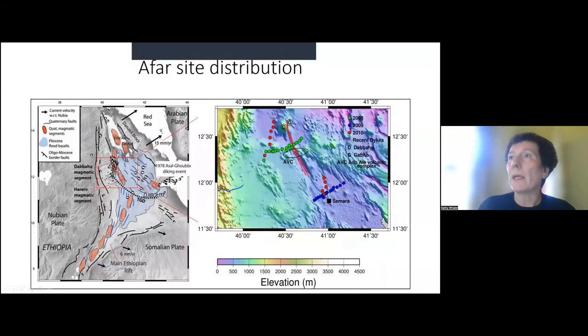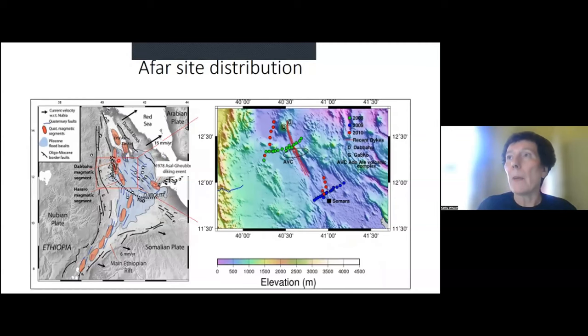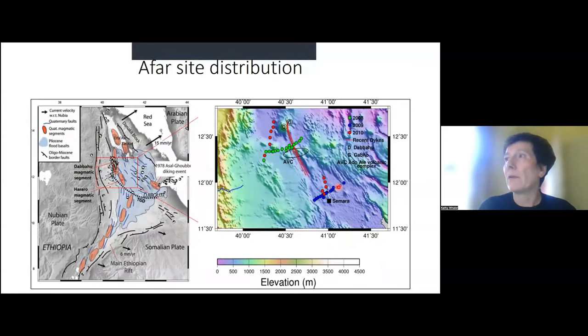So I'm not going to talk anything really about the inversion or treatment of the data, but I'll go on to some actual examples. And in 2005, there was a mega-dike intrusion in a magmatic segment in the Afar, which we've heard plenty about in previous studies. But led by Cindy Ebinger, we went to this area and collected MT data. And I'm going to show you results from two profiles.